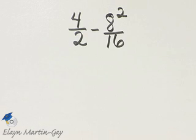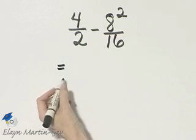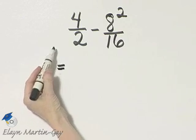Let's evaluate this expression: 4 over 2 minus 8 squared over 16. Keep in mind order of operations.